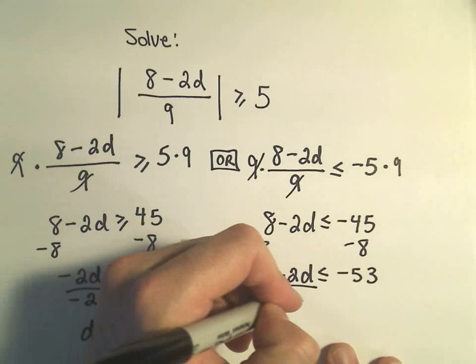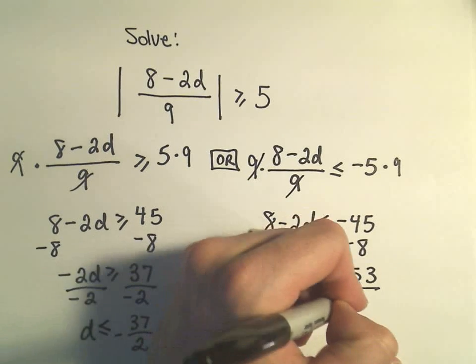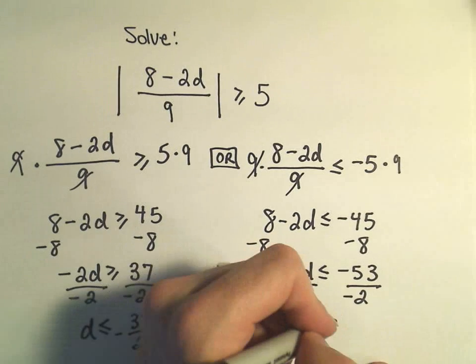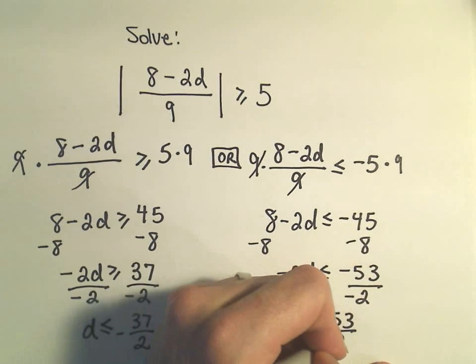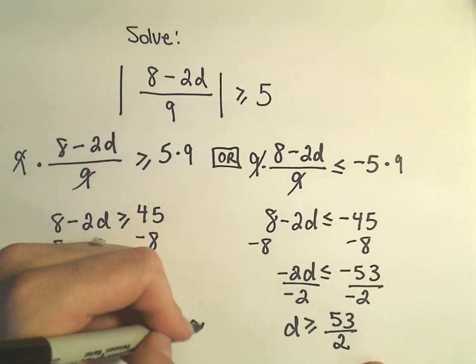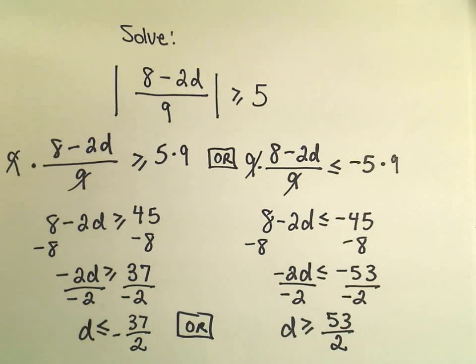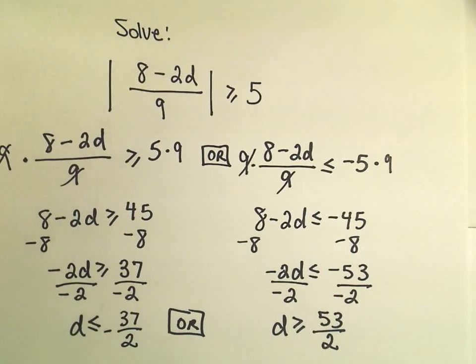And then I'm simply going to divide by negative 2. And it says d has to be greater than or equal to 53 over 2. So as long as d falls in one of these two intervals of numbers, that'll give us our solution.